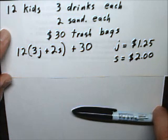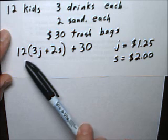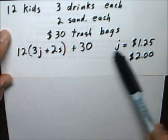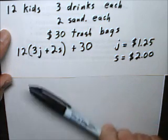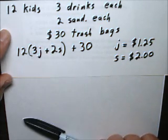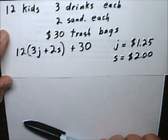When you write it like this, it becomes pretty clear what we have to do. This is the expression for the total cost for the sponsor, and we have to substitute J equals $1.25 and the sandwich equals $2 into the expression, and then we will get the answer.